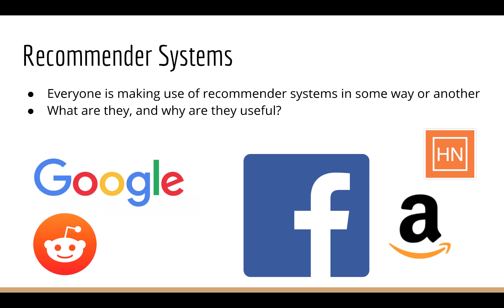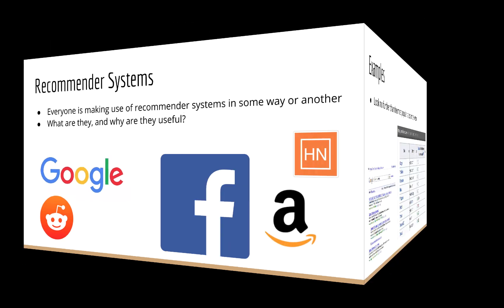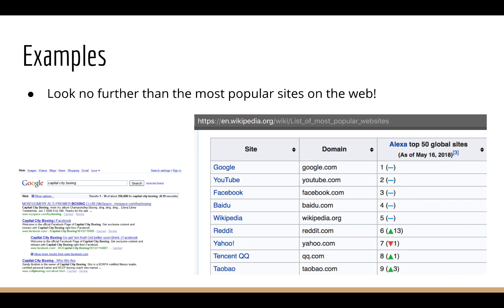So what do I mean by recommender systems and why are they useful? Let's look at the top three websites on the internet, according to Alexa: Google, YouTube, and Facebook.